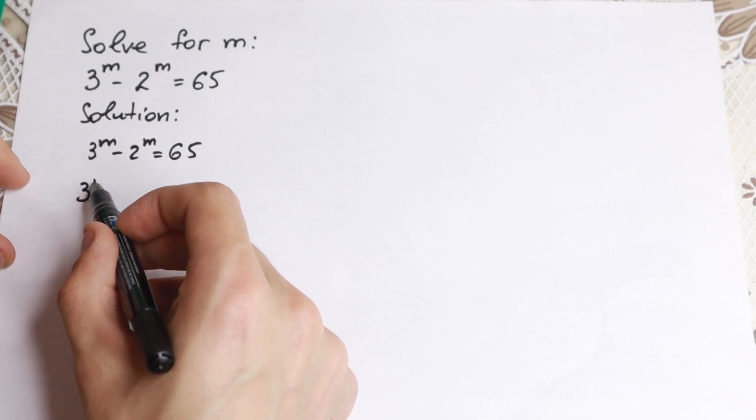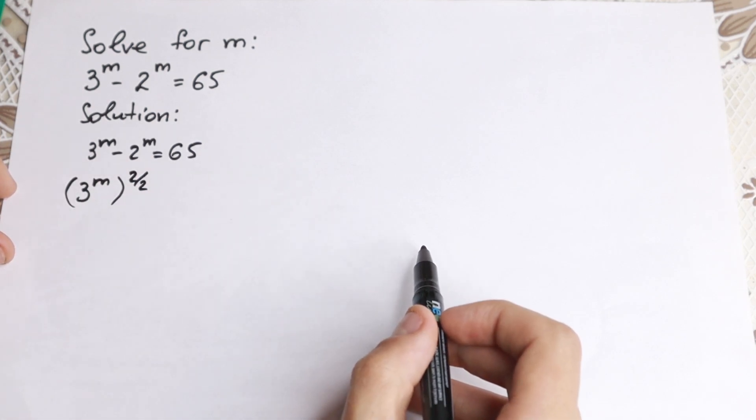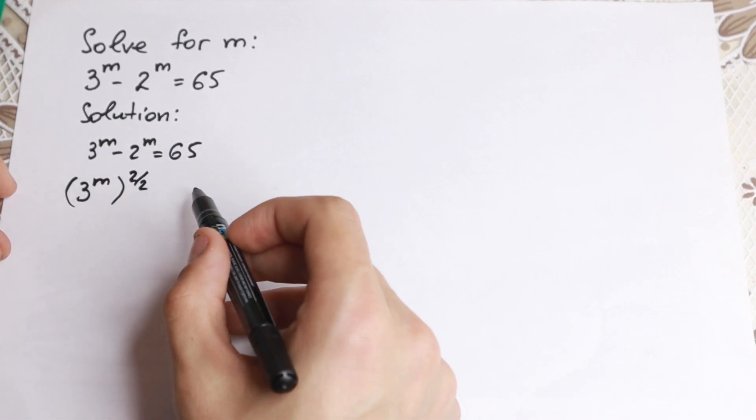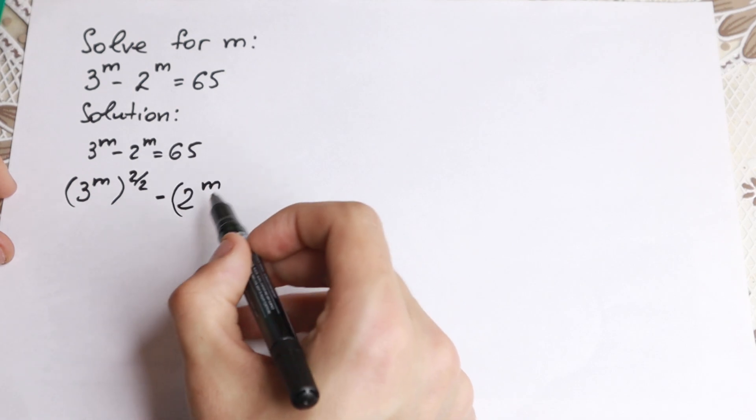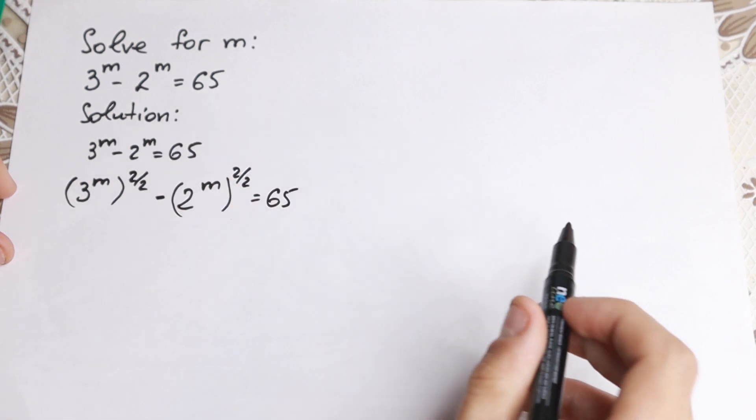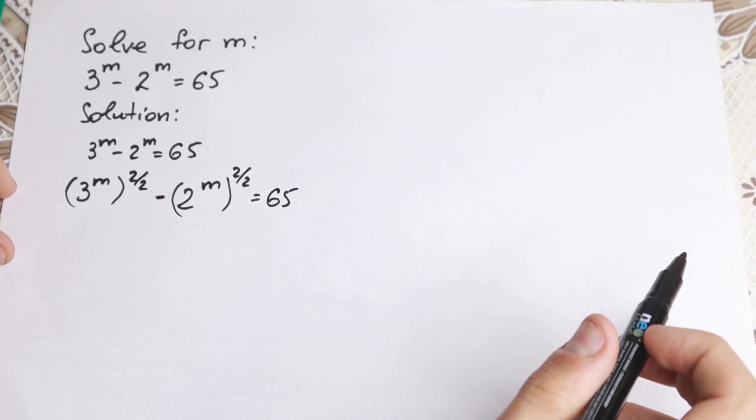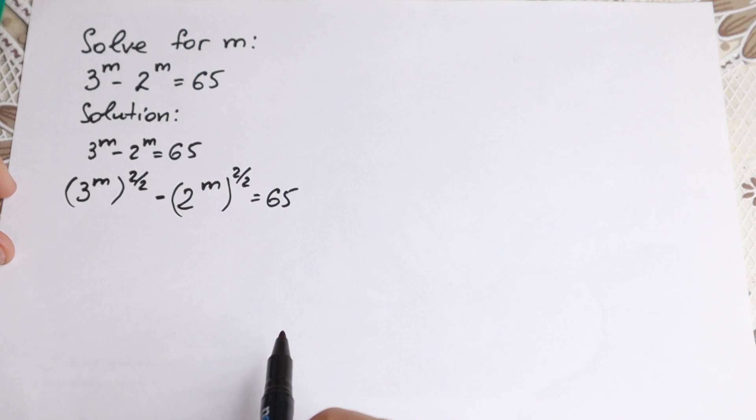Let's write this 3 to the m as 3 to the m raised to the power 2 over 2. It will be completely the same, because this is equal to 1. And minus the same thing with this one, 2 to the m to the power 2 over 2 equal to 65. What we're going to do next?